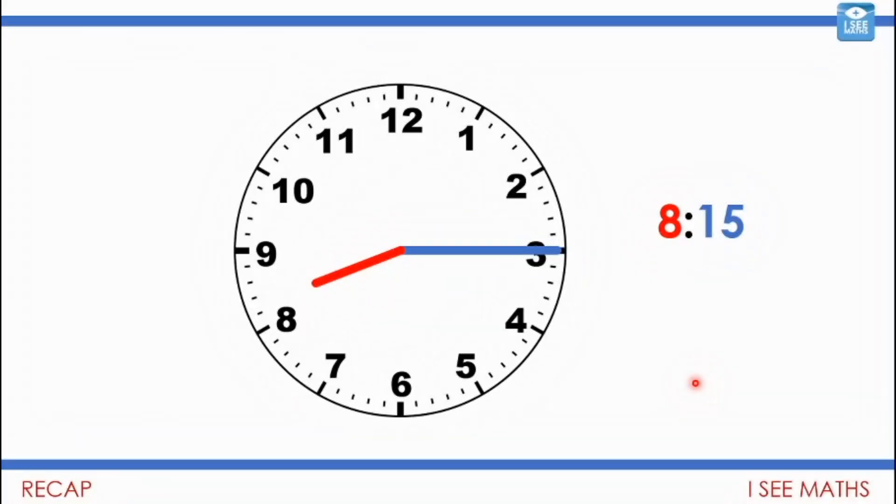We're going to start as normal by a bit of a recap from yesterday's skills. Yesterday we were learning to read clocks, and this was one of them: 8:15. The hour hand shows the hour, the eight, and it's between eight and nine, and the 15 here—the minute hand is pointing at the three, so that's three lots of five minutes, so it must be 8:15.